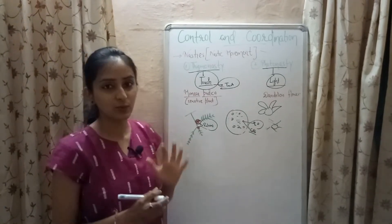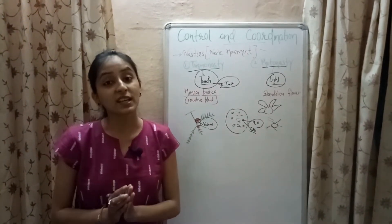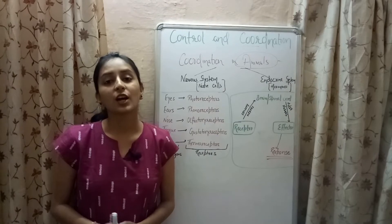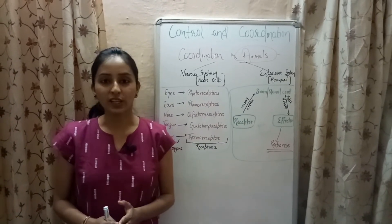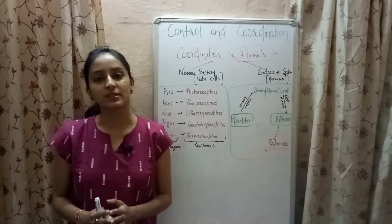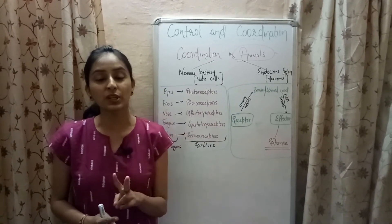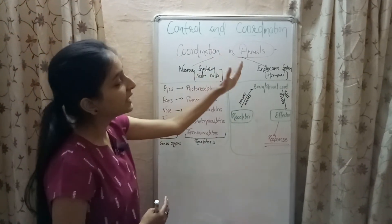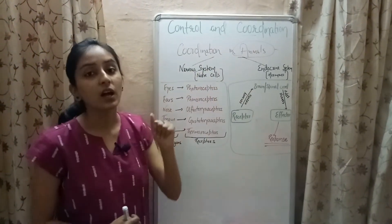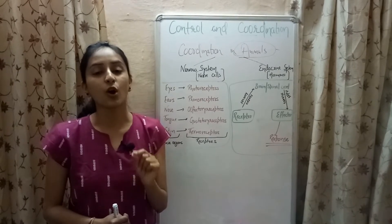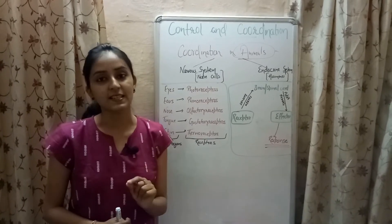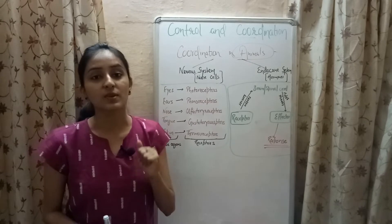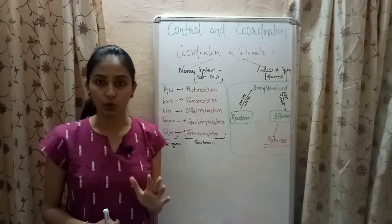This is all about nastic movements. In animals, the process of control and coordination takes place with the help of two organ systems: the nervous system (a system of nerve cells, also known as neurons) and the endocrine system (a system of hormones).